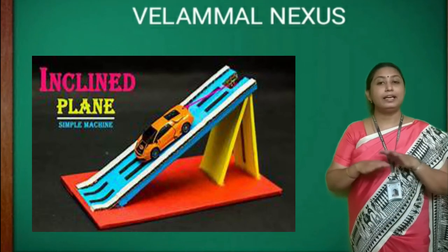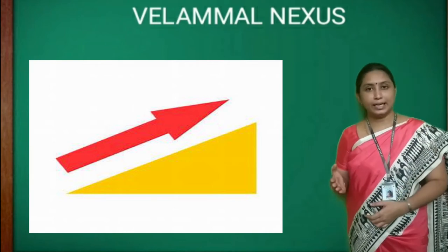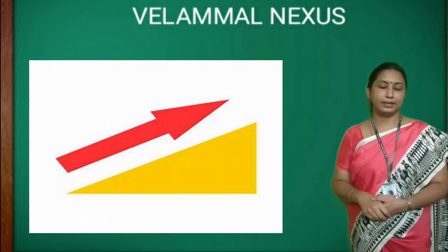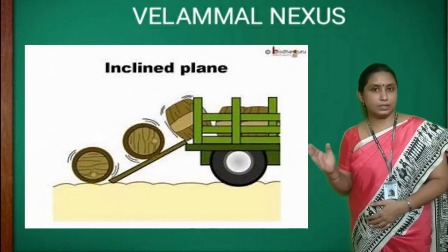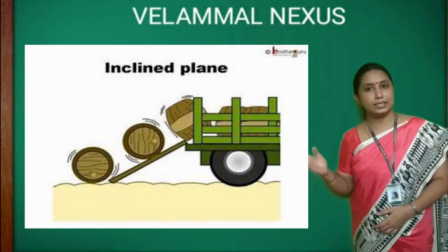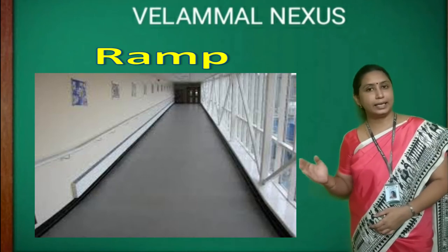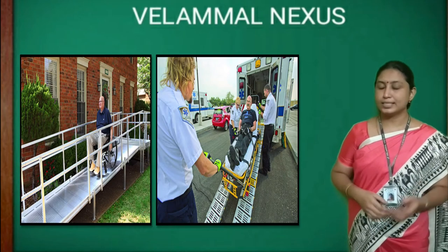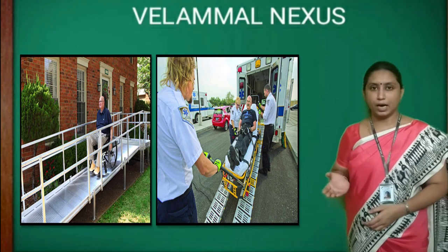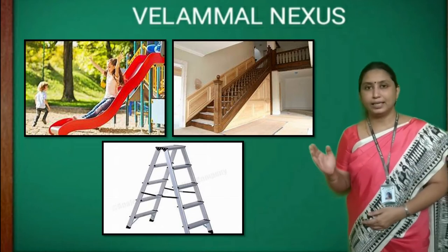The next simple machine is an inclined plane. Any flat surface is called a plane; when the plane is inclined or slanted, it becomes an inclined plane. An inclined plane is a slope that helps move heavy loads with lesser effort. A ramp in a hospital is an example — wheelchairs and stretchers can be easily pushed up and down the ramp.